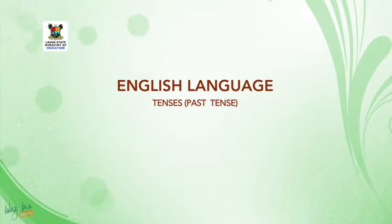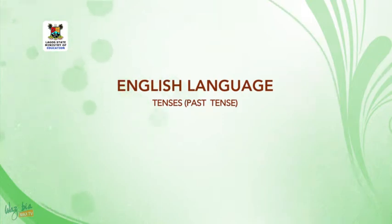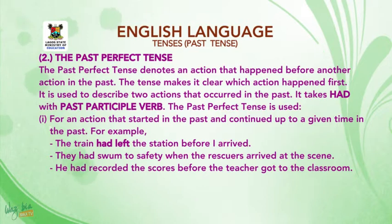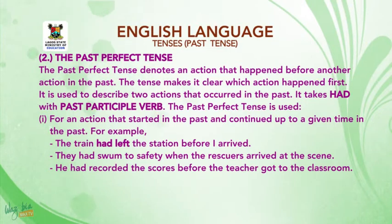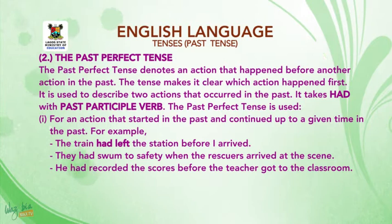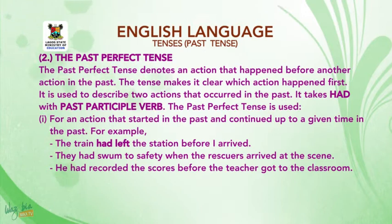Good day students, you are welcome to the second part of today's lesson. The topic is the Past Tense. Let us continue our lesson with the Past Perfect Tense. The Past Perfect Tense denotes an action that happened before another action in the past. The tense makes it clear which action happened first. It is used to describe two actions that occurred in the past.